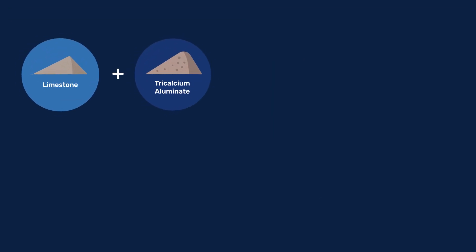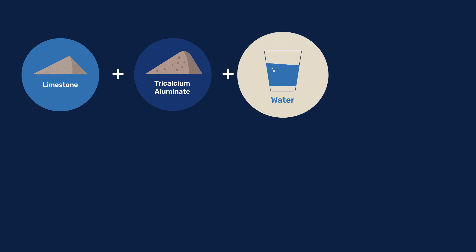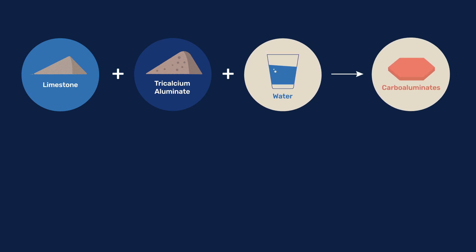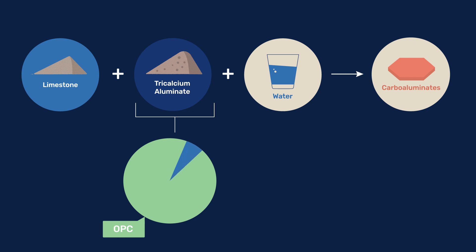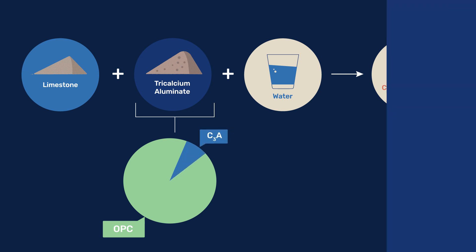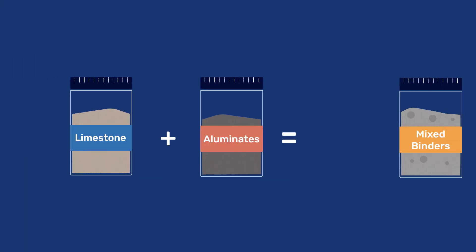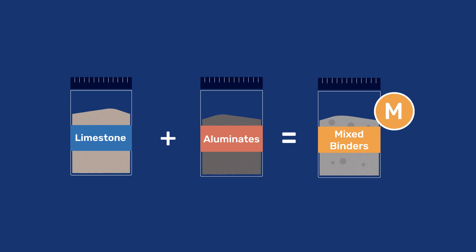In conclusion, despite often being perceived as non-reactive, limestone can lead to the formation of useful hydrates, in particular carboaluminates, that result from its reaction with aluminate-containing phases. As the amount of aluminates in OPC is limited, including aluminate-containing SCMs alongside limestone represents a valid proposition for low-carbon cements.